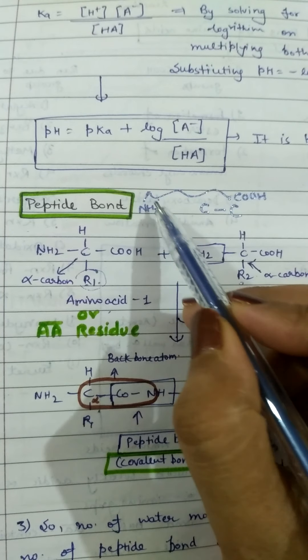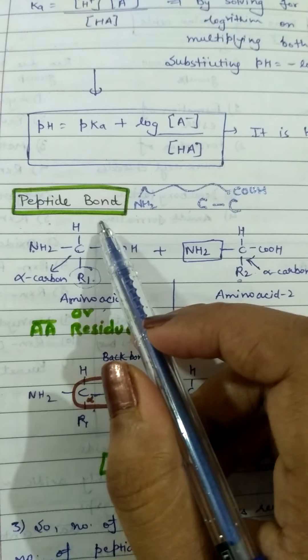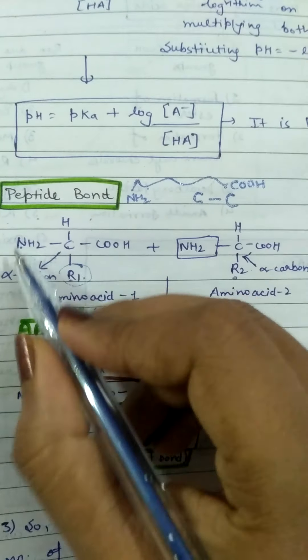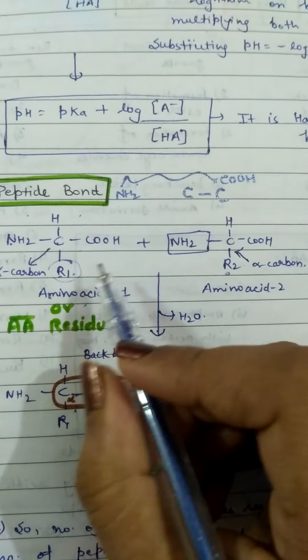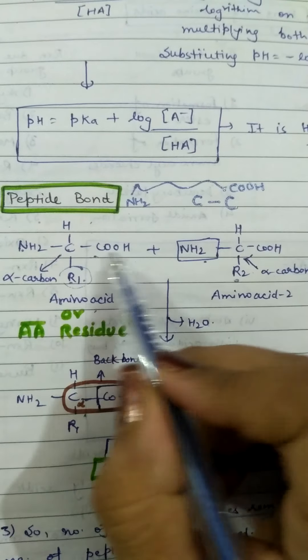But the amino acid is attached with the help of peptide bond. This is amino acid number 1 and amino acid number 2. This is carboxyl group and amino group. Both are different functional groups.